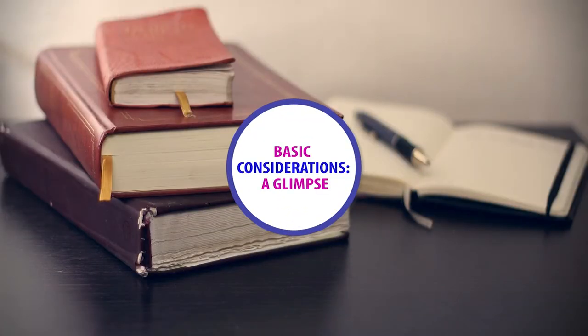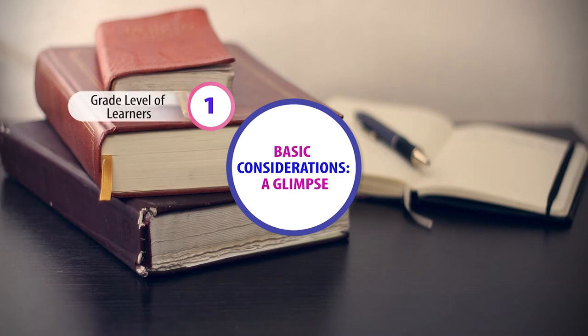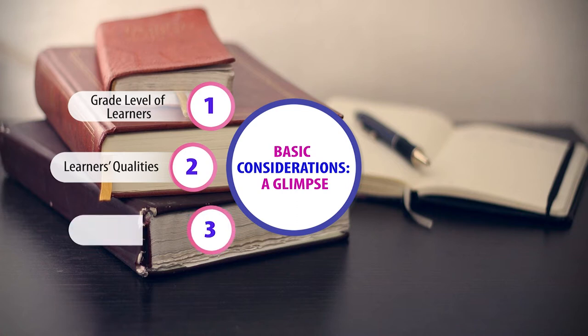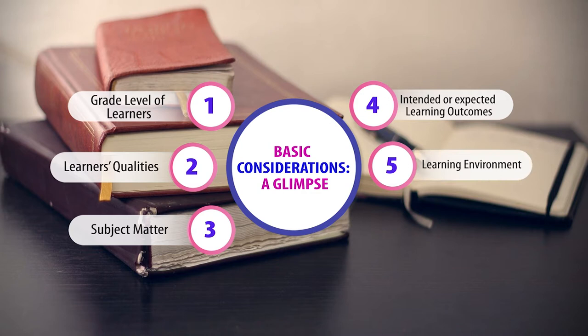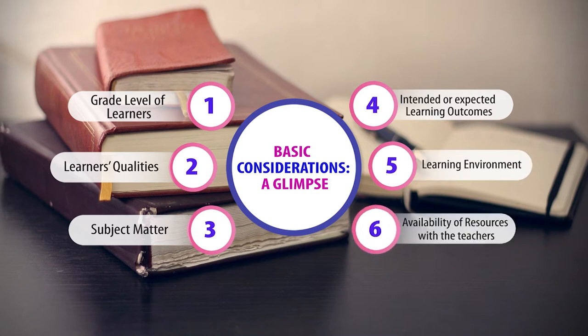Now let us have a glimpse about what basic considerations must be kept in mind by the teacher while selecting an appropriate approach to instruction or while selecting a particular teaching method. These are: first, the grade level of the learners; then learner qualities; then the nature of the subject matter; then intended or expected learning outcomes; then the learning environment; and the availability of resources with the teacher. These are the basic considerations which the teacher must keep in mind while selecting a teaching or instructional approach.